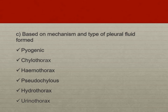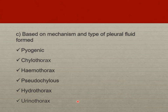We can also classify effusions according to the type of fluid: pyogenic, if it contains pus; chylothorax, if contaminated by chyle with increased triglyceride and chylomicron levels; hemothorax, if there is blood; pseudochylous, associated with rheumatoid arthritis; hydrothorax, containing water; and urinothorax, when contaminated by urine. We will go through all of them separately.